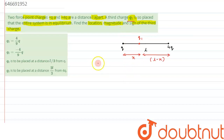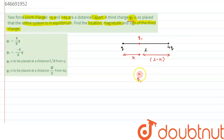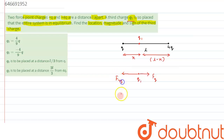Now we have to calculate the nature of charge q1, its magnitude, and its distance. For the system to be in equilibrium, let's analyze the forces on q1. The force due to q will be in the right direction, written as F_q, and the force due to 4q will be towards the left, written as F_4q.